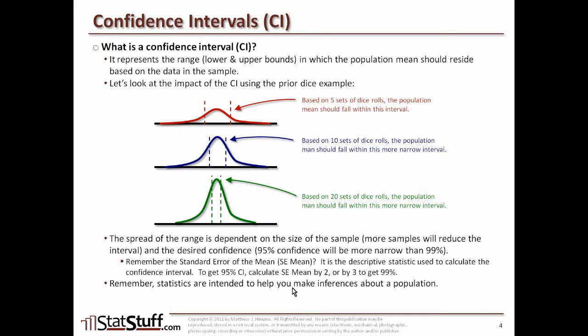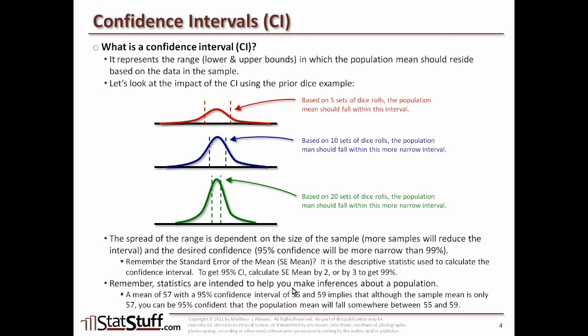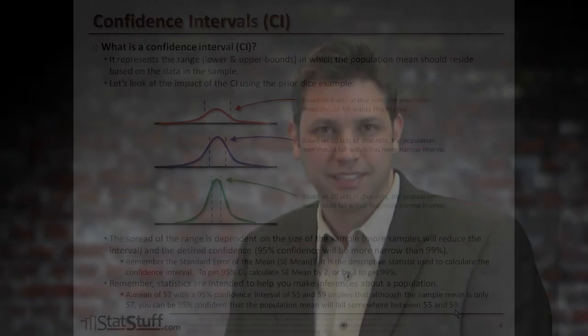Remember, statistics are intended to help us make inferences about a population. For example, if we have a measurement where the mean is 57 and we have a confidence interval of 55 to 59, we're saying that the sample mean is only 57, but we're 95% confident that the actual population mean is going to fall somewhere between 55 and 59.